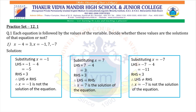Next, substituting x equals minus 7: LHS equals minus 7 minus 4, that is minus 11. RHS equals 3. Therefore LHS is not equal to RHS. Therefore x equals minus 7 is not the solution of the equation.